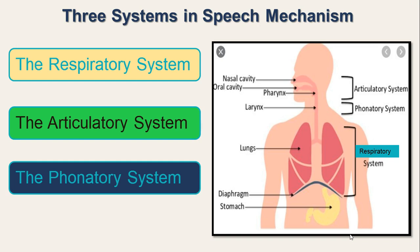The first part, articulation of speech sounds, is nothing but the production of speech sounds. It involves speech mechanism. The speech mechanism is carried out in three systems: the first one is the respiratory system, second is the articulatory system, and third is the phonatory system.